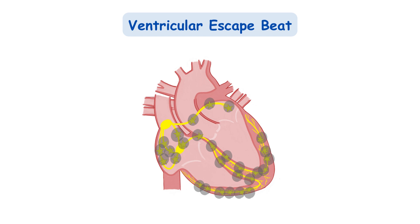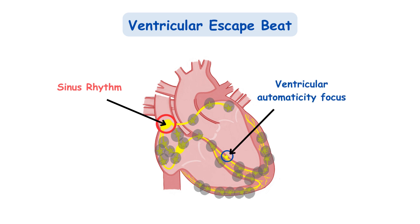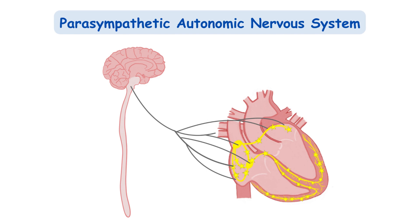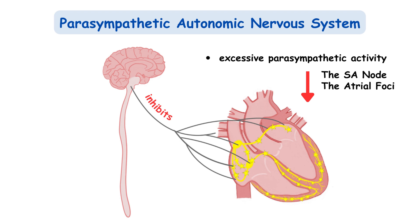Next, we have the ventricular escape beat. After a regular sinus rhythm, a ventricular automaticity focus may escape to produce a beat if it is no longer overdrive suppressed by a depolarization wave coming from above. It is quite unusual for all automaticity foci from above to fail to pace, but there is a certain situation where this can occur. The parasympathetic system of the autonomic nervous system stimulates just the upper half of the heart and not the ventricles. So in a situation of excessive parasympathetic activity that inhibits the SA node, as well as all atrial foci and the AV node too, to the point of inactivity, a ventricular automaticity focus will wake up to save the situation.